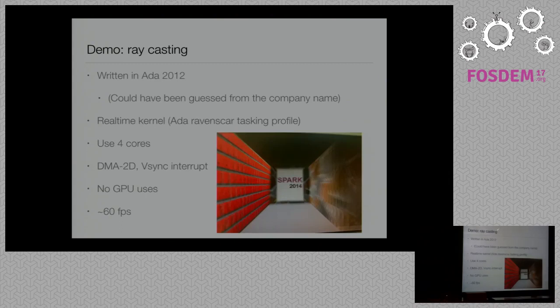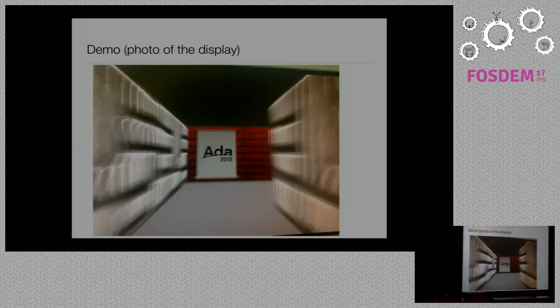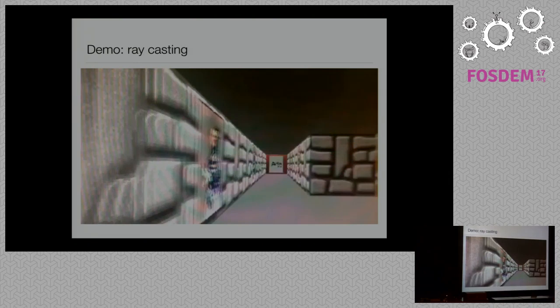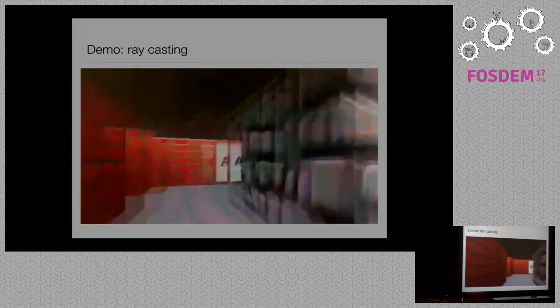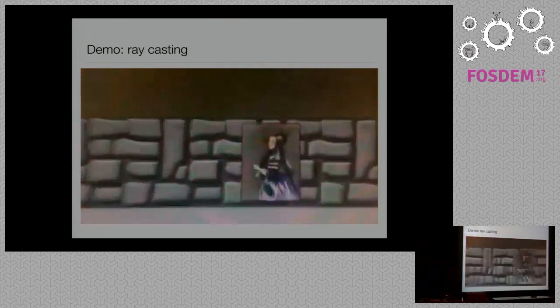What we have done with that: one colleague — Conning — did a raycast demonstration demo using all four cores and DMA2D from the GPU to speed things up. Actually it doesn't use the GPU, and we reached 60 frames per second. This is a photo and a video from the demo. Bare-metal!